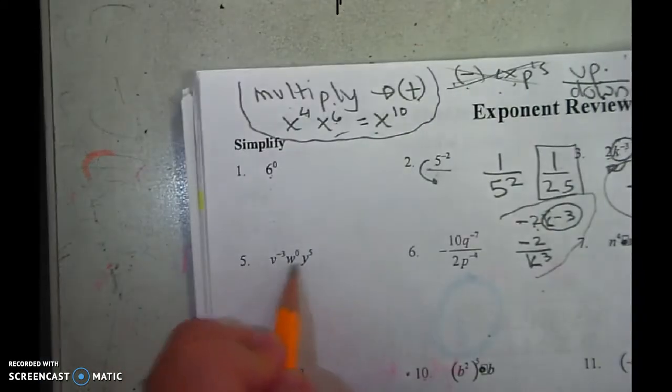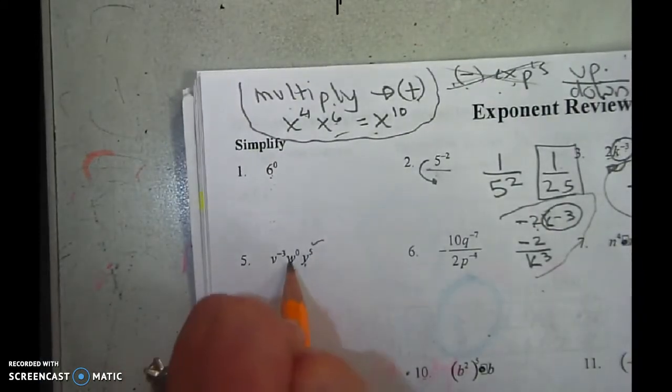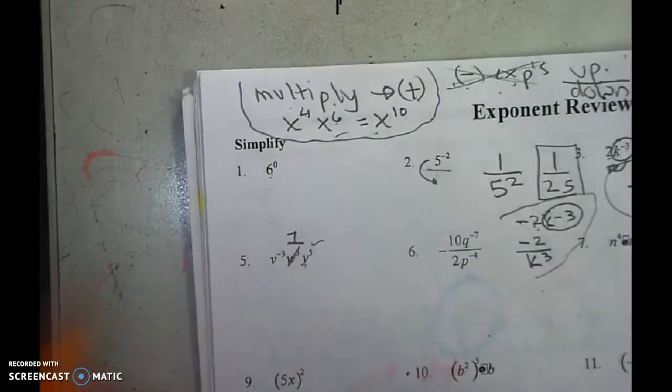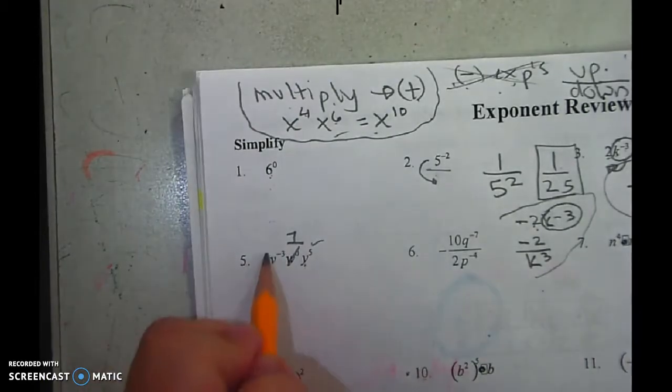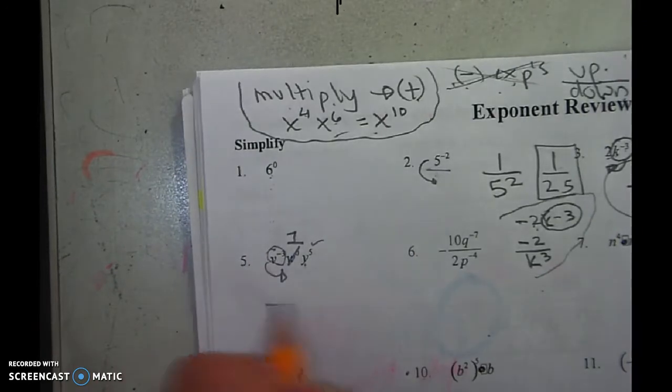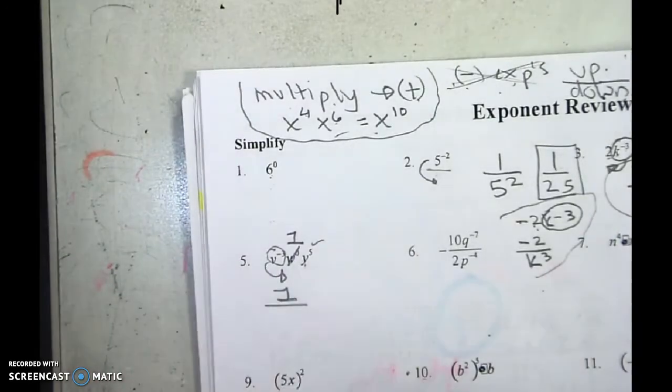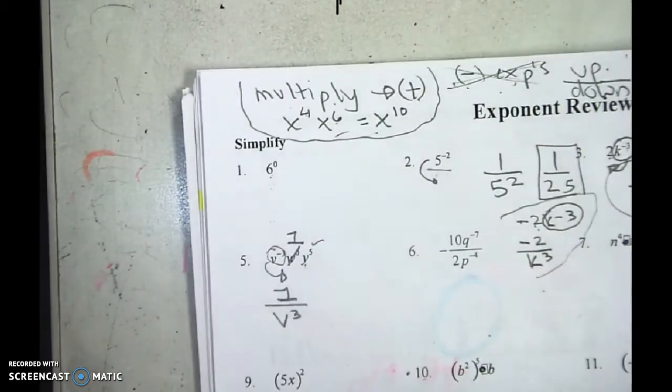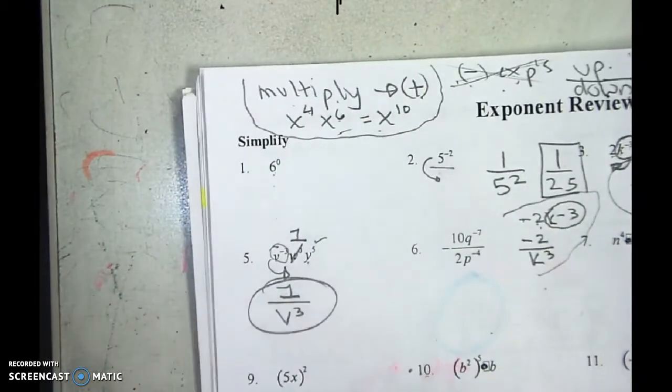Number 5. The y to the 5th is good. Anything to the 0 power is 1. So I don't really need to write the 1. But when it's negative and up, I need to put it down. Since I'm putting it down, I do have to put that 1 there. Otherwise, I can't show anything. Done.